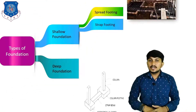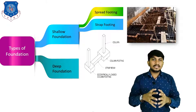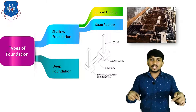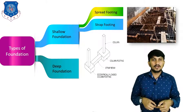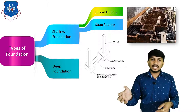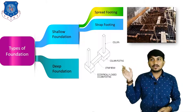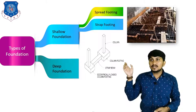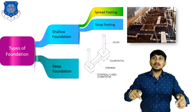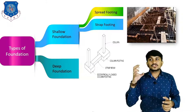The next type of shallow foundation is strap footing. This type of footing is mainly used where the foundation of a column is at the boundary of the building, where we cannot extend the foundation fully. In this case, we transfer the load of that footing to another column footing by a beam called a strap beam. The load of the smaller column is transmitted by the strap beam into the larger column footing. This is called strap type foundation.